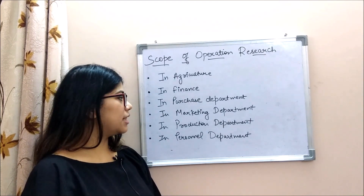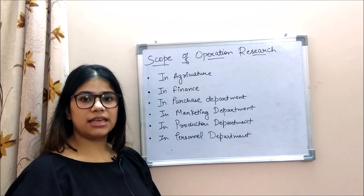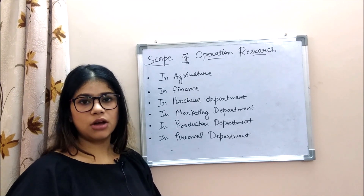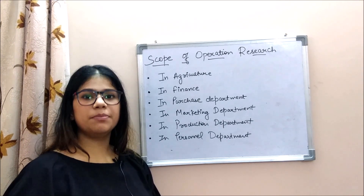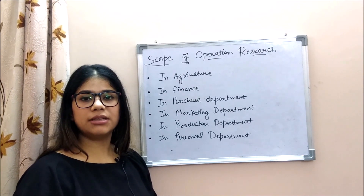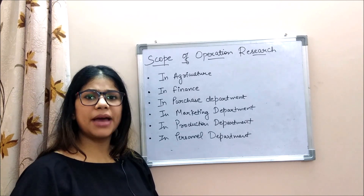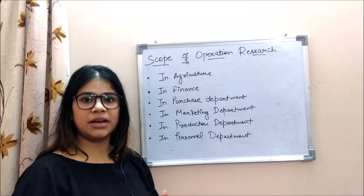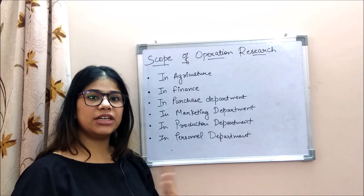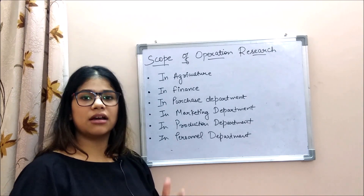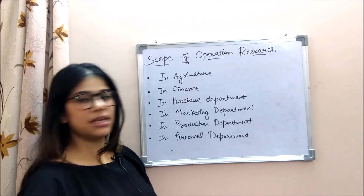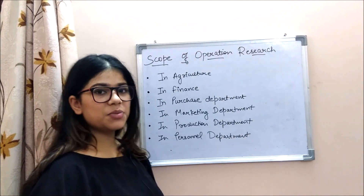The next scope is the marketing department. OR techniques help determine how to sell the product, which medium to use, the minimum per unit sale price, and which advertisement techniques and investment in media provide the best results with minimum time and cost.